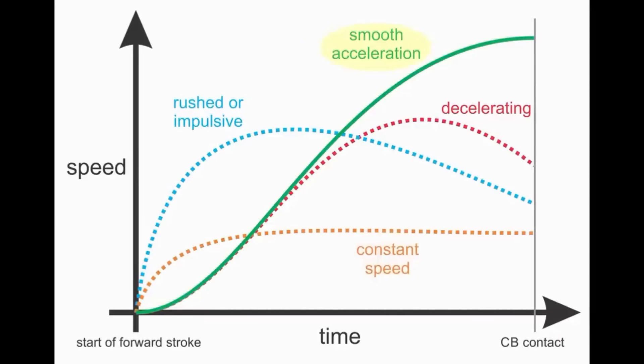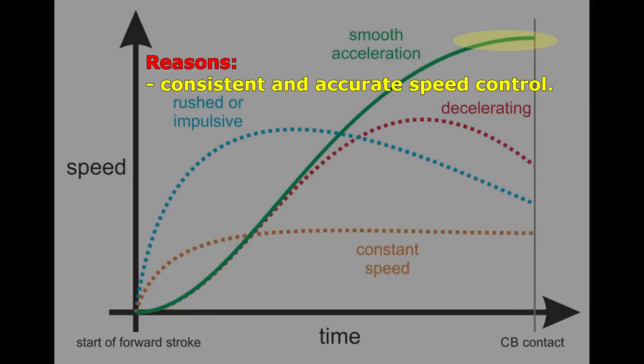Again, the green curve represents good timing. One reason why most top players reach maximum speed just before tip contact is it results in the most consistent and accurate speed control with the least effort. With the speed leveled off at tip contact, if the acceleration timing is off a little, it does not affect the cue speed very much.